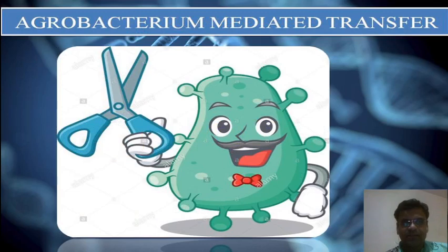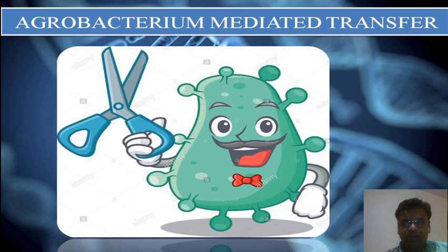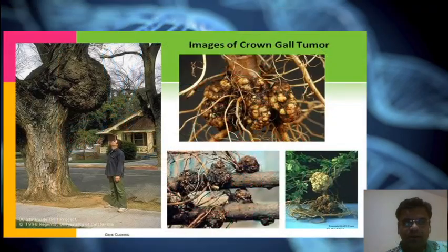Now we will see agrobacterium-mediated gene transfer. Agrobacterium is a soil-borne gram-negative bacterium. It invades many dicot plants when they are injured at the soil level and causes crown gall disease. Crown gall can look like this — it is a disease in a plant formed by infection of agrobacterium.